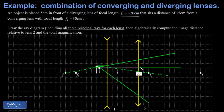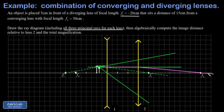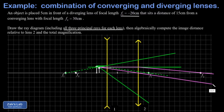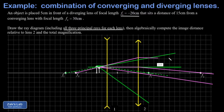We start taking rays off of this first image. The first one comes off parallel to the principal axis and is refracted through the focus for the second lens, which is f2 way out here. Then a ray comes off at the right angle to pass through the center of the second lens — that is unrefracted. Finally, a ray comes at the second lens from the direction of f2 on the near side, and that ray is refracted parallel to the principal axis.